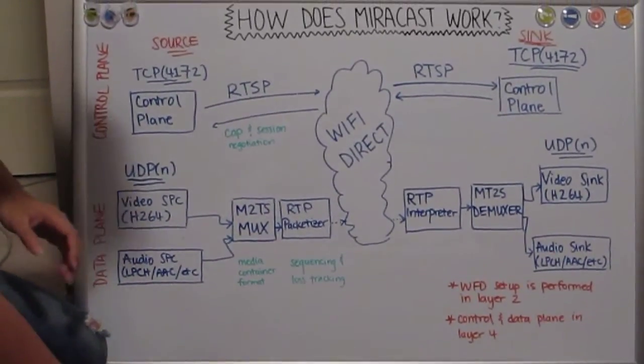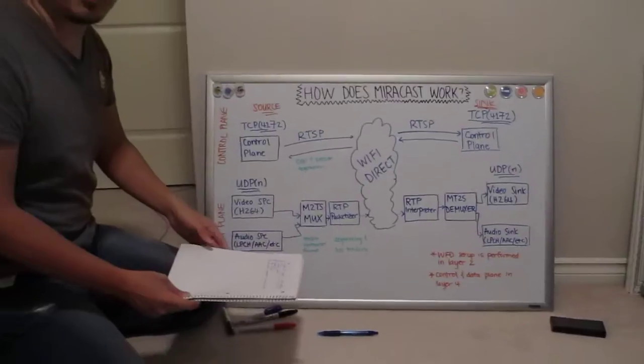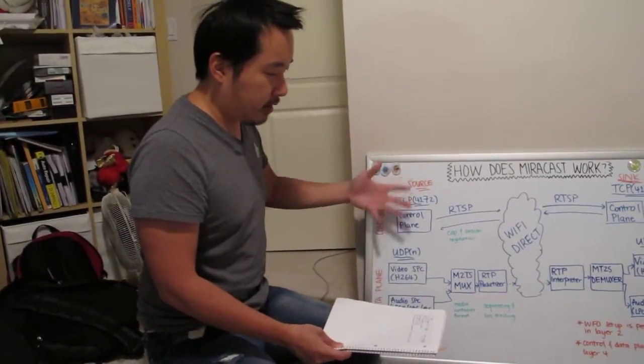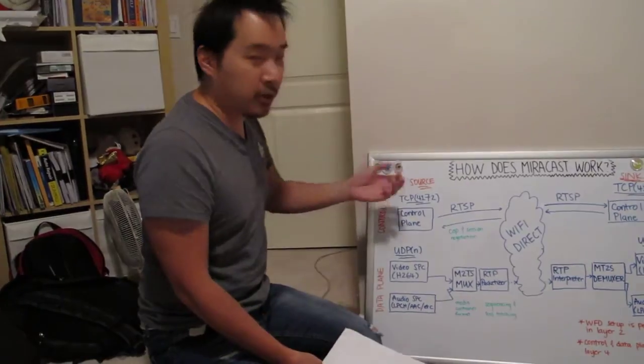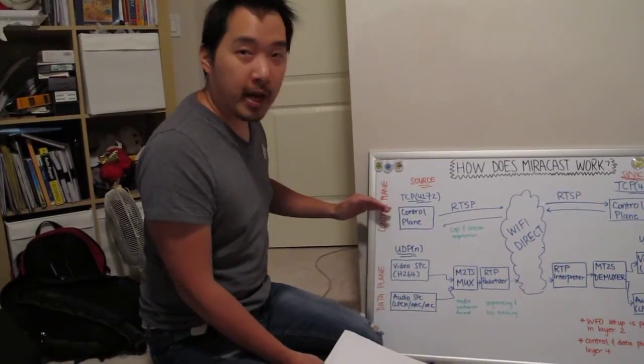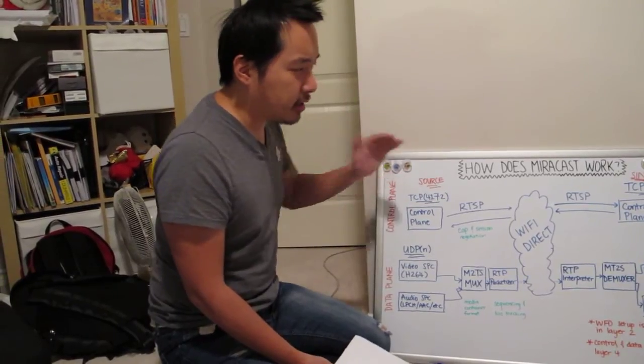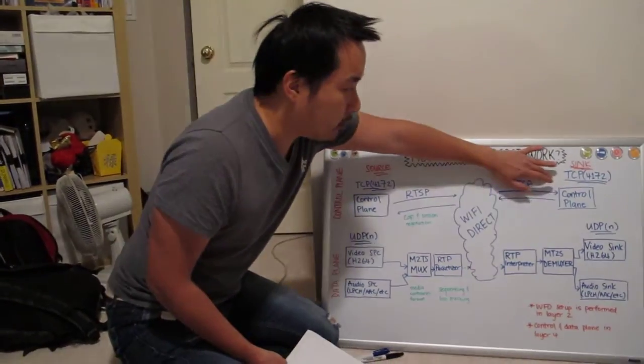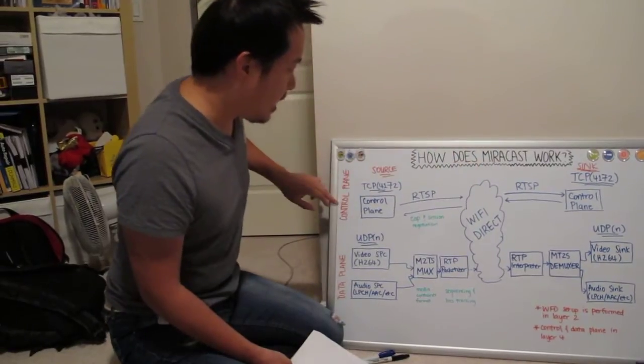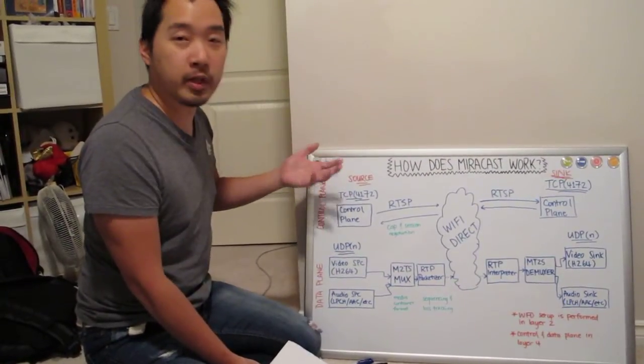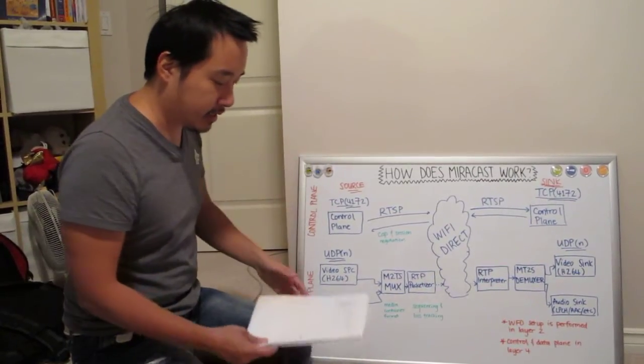What I didn't cover is encryption. So Miracast does support encryption, but for my end, I simply disable it effectively in the control path, and it seems fine with us. So the Pyrocast project, I'm requesting having no encryption, and the source or the phone I was using was willing to cope with that. So everything just works as is.